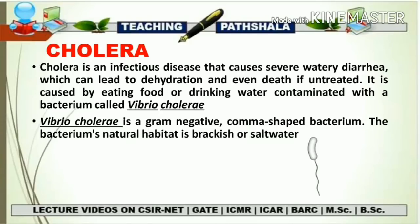If we talk about Vibrio cholerae, it is a gram-negative, comma-shaped bacterium and it is mainly found in brackish or salt water. At a time it may have one flagella, as you can see in the figure, or it may have multiple flagella depending upon the species of Vibrio.